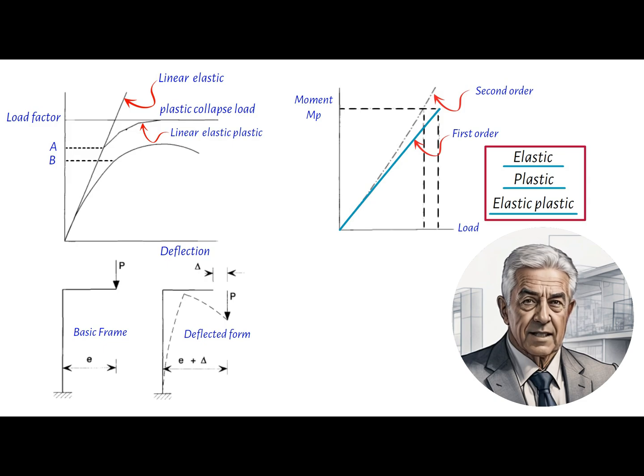Conversely, second-order analysis takes into account the changes in effective stiffness of structure due to the loads acting upon it. This is necessary for structures such as cables, struts, and members in bending.